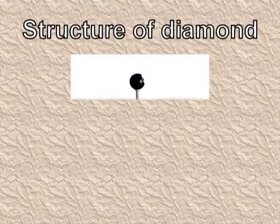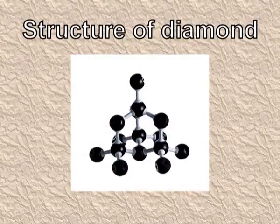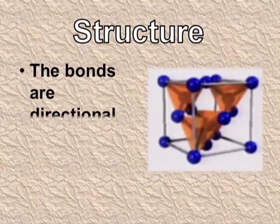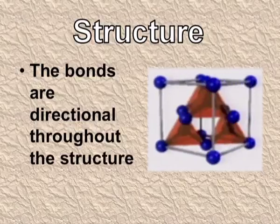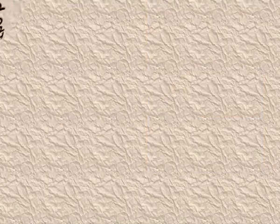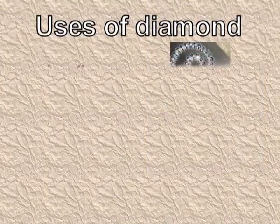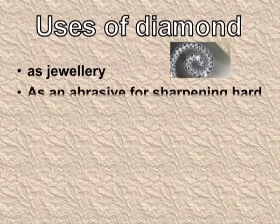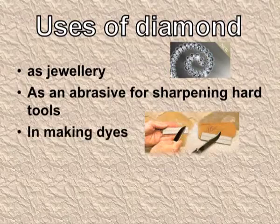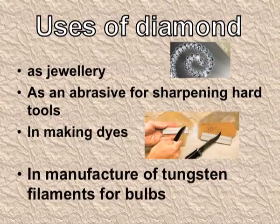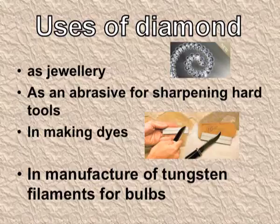The structure of diamond shows directional bonds throughout the structure. Uses of diamond include: as jewellery, as an abrasive for sharpening hard tools, in making dies, and in the manufacture of tungsten filaments for bulbs.